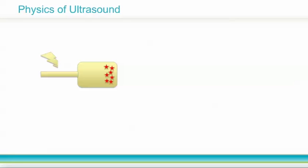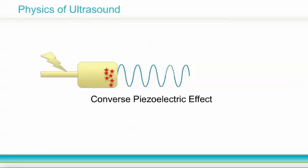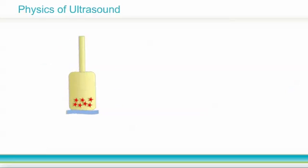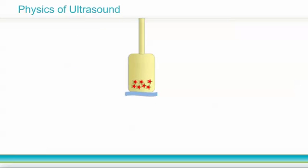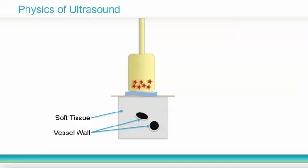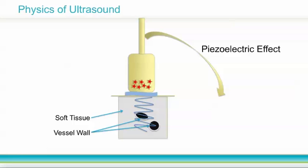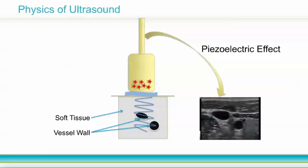Let's go through the steps that occur when we turn the ultrasound machine on and place the probe on a patient. Electricity is applied across the crystals in the transducer, causing them to vibrate and emit an ultrasound wave. This is called the converse piezoelectric effect. A layer of conductive gel helps facilitate penetration of the wave through the skin and into deep structures. The wave is reflected at the interface between tissues that have different acoustic impedances — for example, subcutaneous soft tissue and a vessel wall. The transducer detects the returning sound wave and transforms it into an electric signal. This is called the piezoelectric effect. This signal is then processed and displayed as an image on the screen.